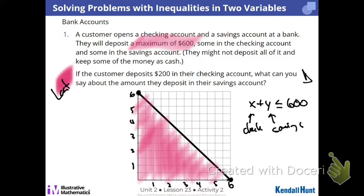We've got the inequality, we've got the graph. It says pick a combination that works. Who's got a combination? 300, 300 — you're maxing it out. What about no money — keep it all in your pocket? Not if there has to be some in each, but in theory it could work. It's 600 or less. What about 100 and 300? So pretty much any combination — like 100 in checking and 300 in savings — works.